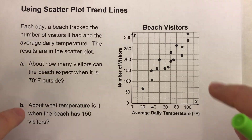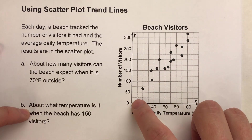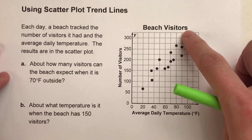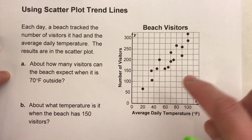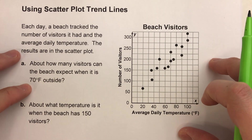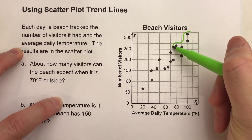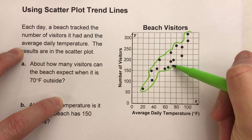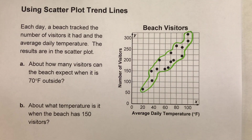The first thing you want to do when you have a scatterplot is draw in a trend line so you can represent the data, because when you have this much data it's hard to use it directly — we need to kind of average it out. Before I draw my trend line, I always like to put an outline around the data because it makes it a little easier to figure out where my trend line is going to be.